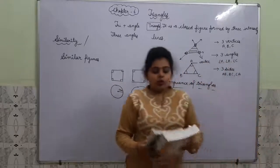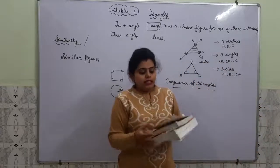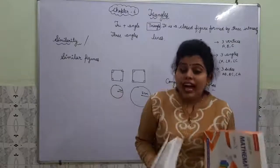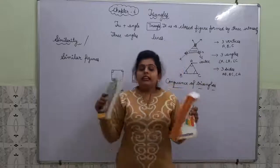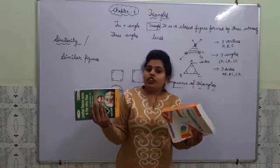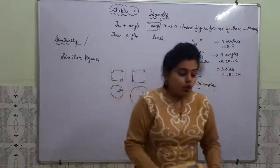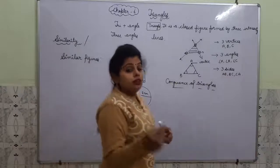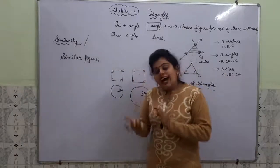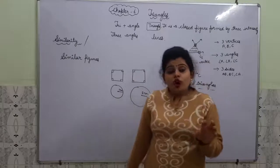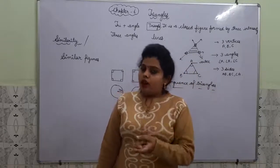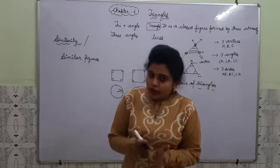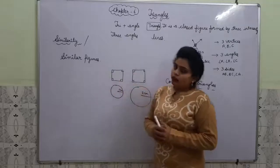If we talk about two books, these are similar figures because they look alike. We are not talking about equal length, equal breadth, or equal height. Those figures which look similar — which have the same shape — but it is not necessary that their dimensions are equal. Those are called similar figures.